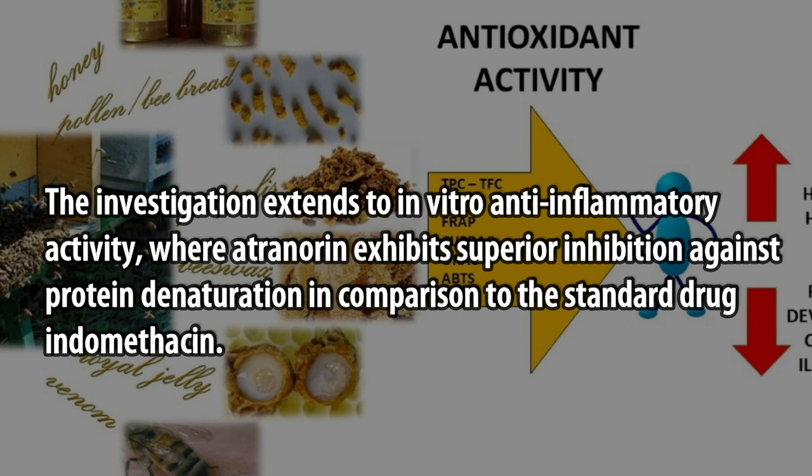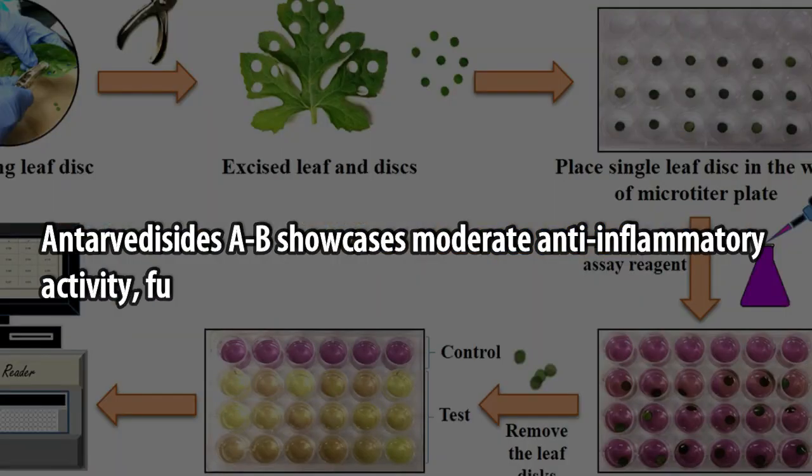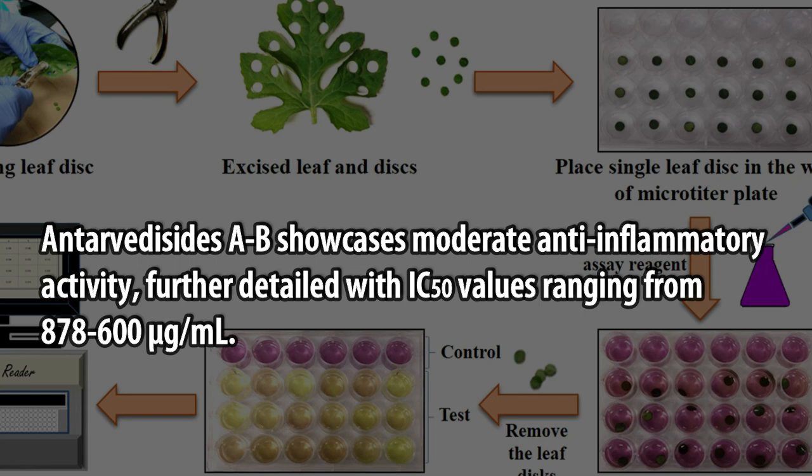The investigation extends to in vitro anti-inflammatory activity, where Atranorin exhibits superior inhibition against protein denaturation in comparison to the standard drug indomethacin. Antavidacides A and B showcase moderate anti-inflammatory activity, further detailed with IC50 values ranging from 878 to 600 μg/mL.